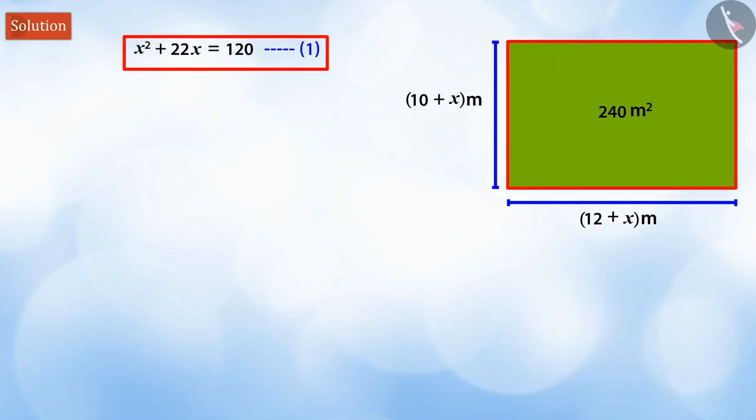Now, if we divide the coefficient of x in equation 1 by 2, we get 11. Let us add and subtract the square of 11 to the left side of equation 1 to keep the equation balanced.